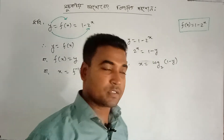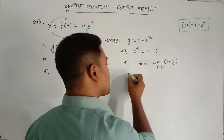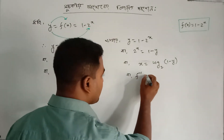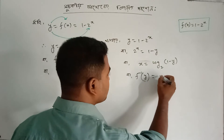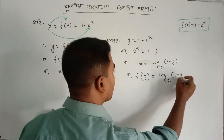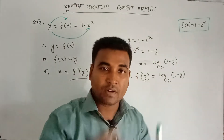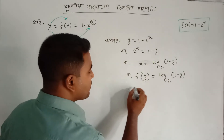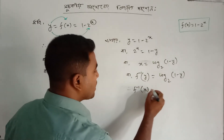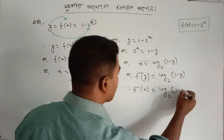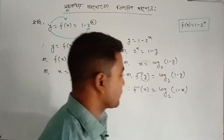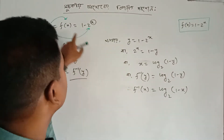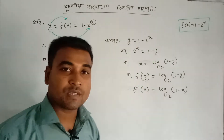W and y are common, which goes to x with the form of logarithm. The result will be F inverse Y. Then I have to write F inverse X equal to log base 2 of 1 minus X. So log base 2 of (1 minus X) is the inverse function.